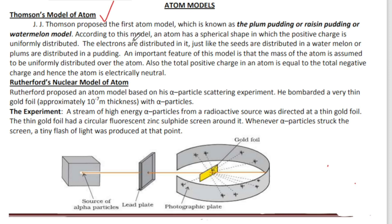J.J. Thomson's atom model is known as the plum pudding model. J.J. Thomson proposed the first atom model, which is known as plum pudding, or raisin pudding, or watermelon model.